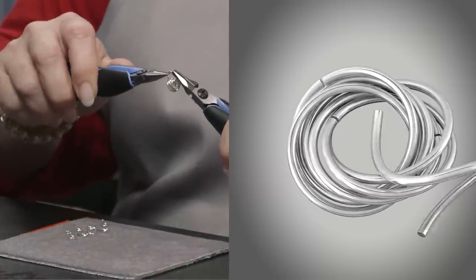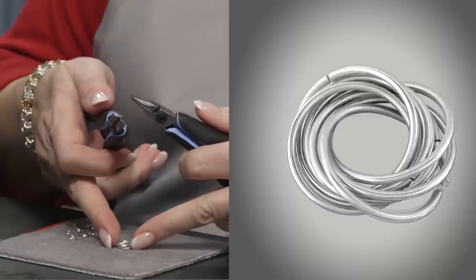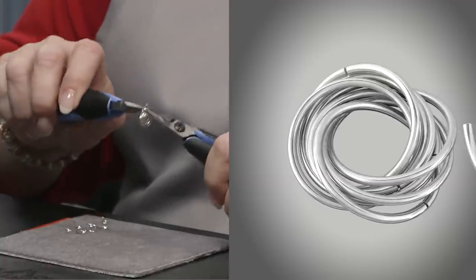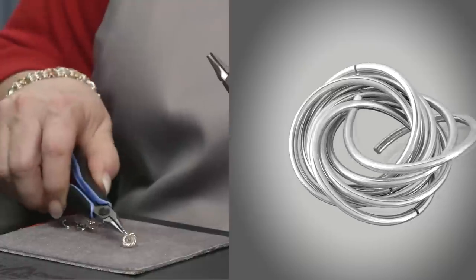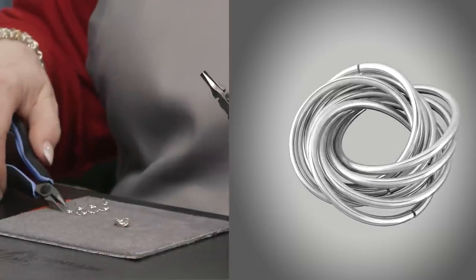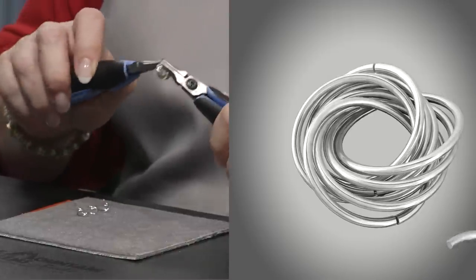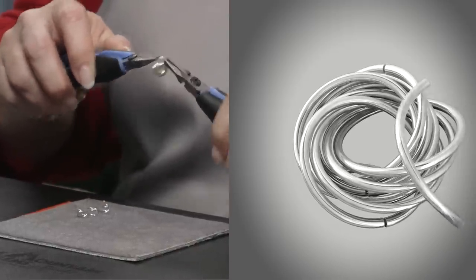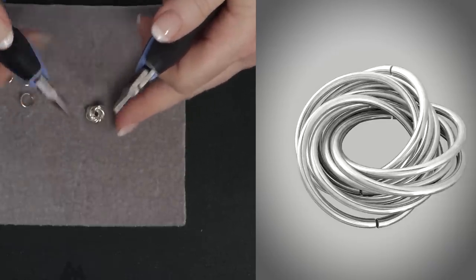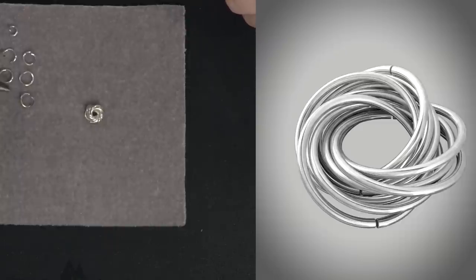Just keep going along and each time you put it through the center of the nest and you're going through all of the jump rings that you've already placed. Continue to nest it nicely. Okay, see it gets a little harder to nest as you get more and more jump rings in there and you notice that the hole in the center is getting smaller.